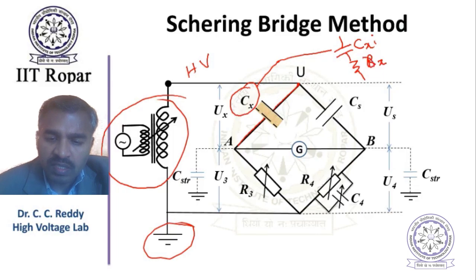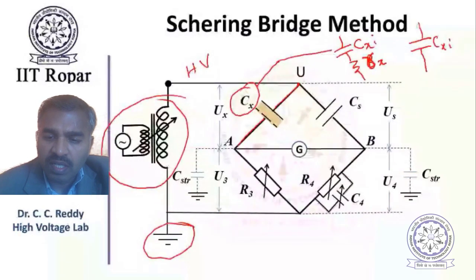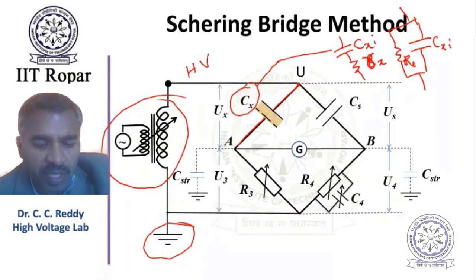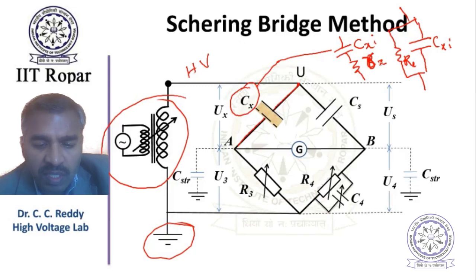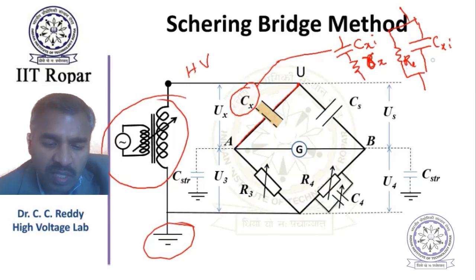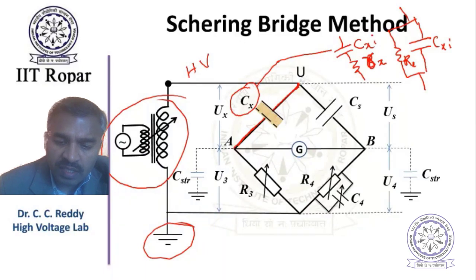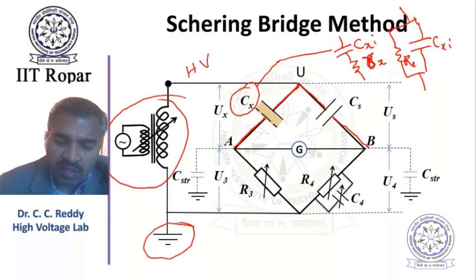When it is a series combination, we use small rx, and when it is parallel, we use capital R, Cx, and Rx. It can be either of these two combinations - it doesn't matter. Even the tan delta value will not be different whether you assume the series model or the parallel model. So Cx is the unknown capacitance which is to be measured.